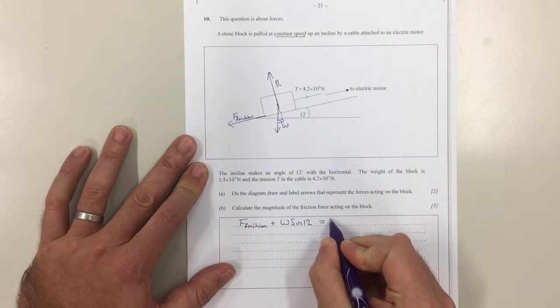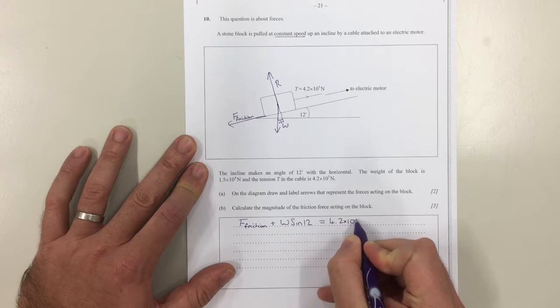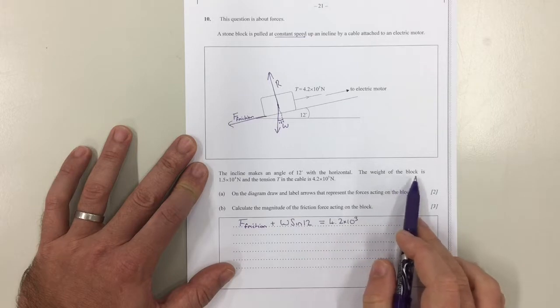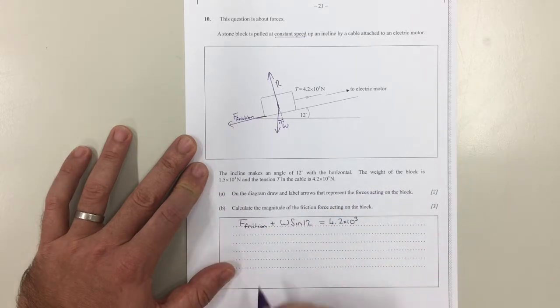So that equals 4.2 times 10 to the 3. Now W sine 12, we've got W here, it's given to us as 1.5 times 10 to the 4.